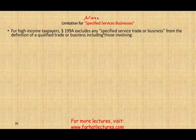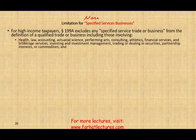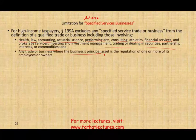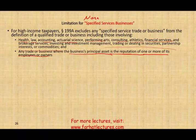For high-income taxpayers, Section 199 excludes any specified service trade or business — sometimes called SSTB — from the definition of a qualified trade or business. This includes businesses involving health, law, accounting, actuarial science, performing arts, consulting, athletes, financial services, and brokerage. These are considered specified service businesses because the involvement and reputation of the owner is central to the business. Any trade or business where the principal asset is the reputation of one or more of its employees or owners is called an SSB. Architects and engineers are specifically excluded from this definition.